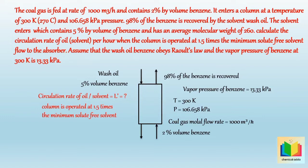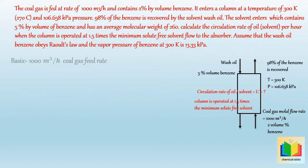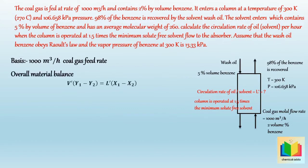We take the basis as 1000 cubic meters per hour coal gas feed rate. To calculate L dash minimum, we take a material balance of benzene over the tower: V dash times (Y1 minus Y2) equals L dash minimum times (X1 minus X2). From this equation, if we know Y1, Y2, X1, X2, and V dash, we can calculate L dash minimum, and from this the actual solvent flow rate.